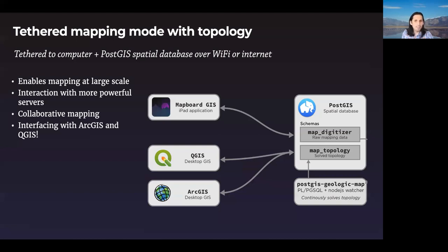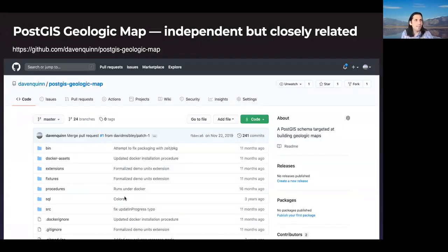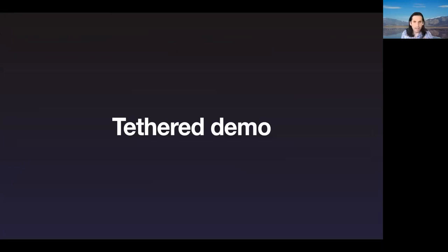There's even another layer to this: the tethered mapping mode with topological solving. That limited topology engine we saw on the SpatiaLite side — there is a much more robust project I've developed called PostGIS Geologic Map that works with a PostGIS database and solves the topology of a geologic map in real time. One thing to emphasize is that it is in conjunction with Mapboard GIS but totally separate — you could use it even if your preferred mapping platform was QGIS or some other data input device, as long as it saves to PostGIS. These are two separate advances.